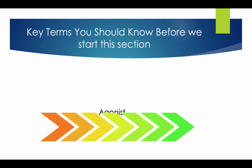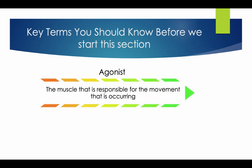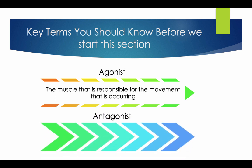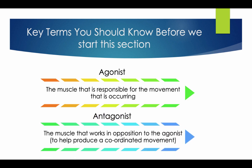Key terms you should know. Agonist: the muscle that is responsible for the movement that is occurring. Antagonist: the muscle that works in opposition to the agonist to help produce the coordinated movement.